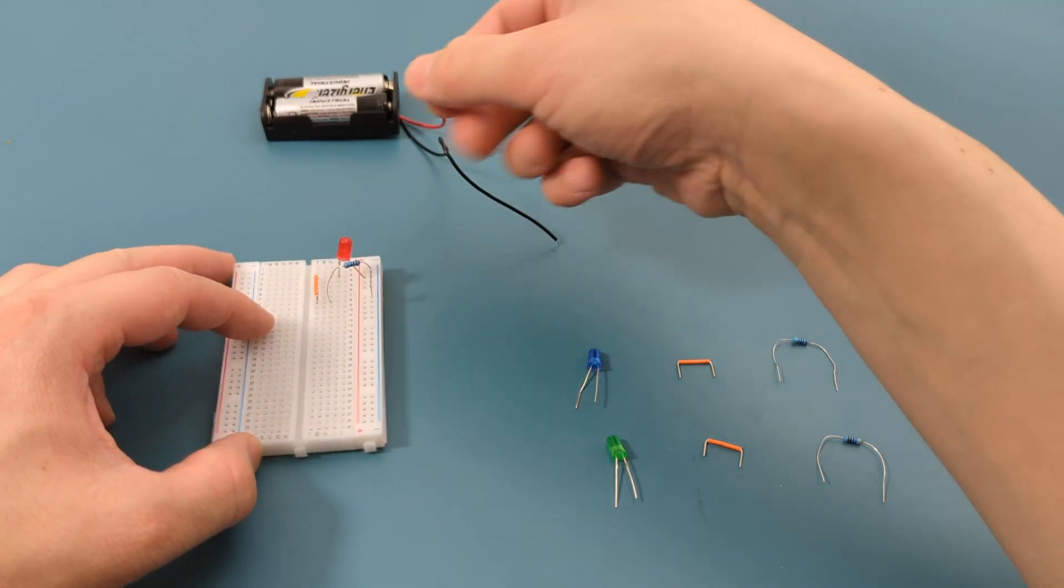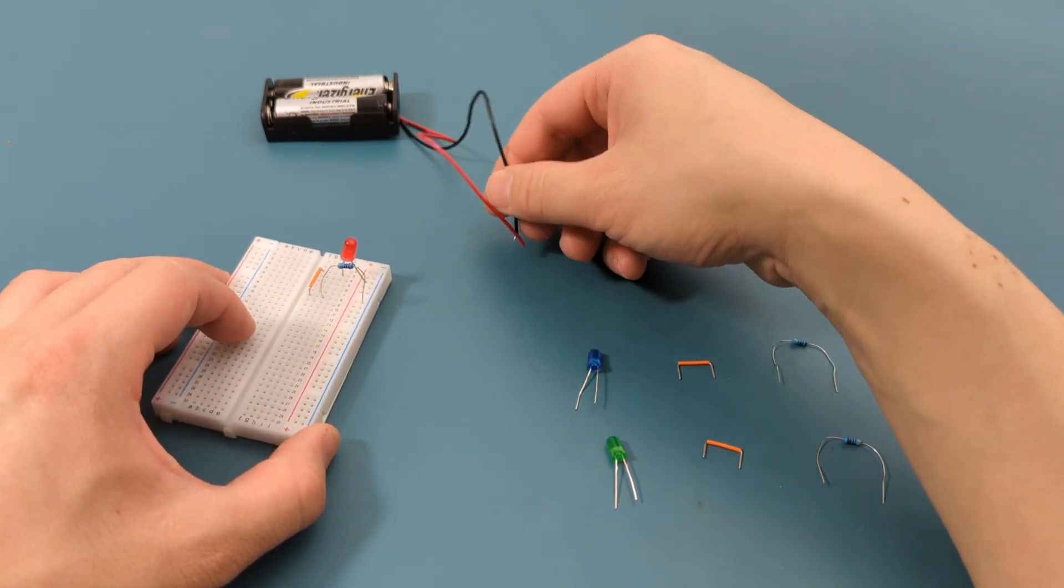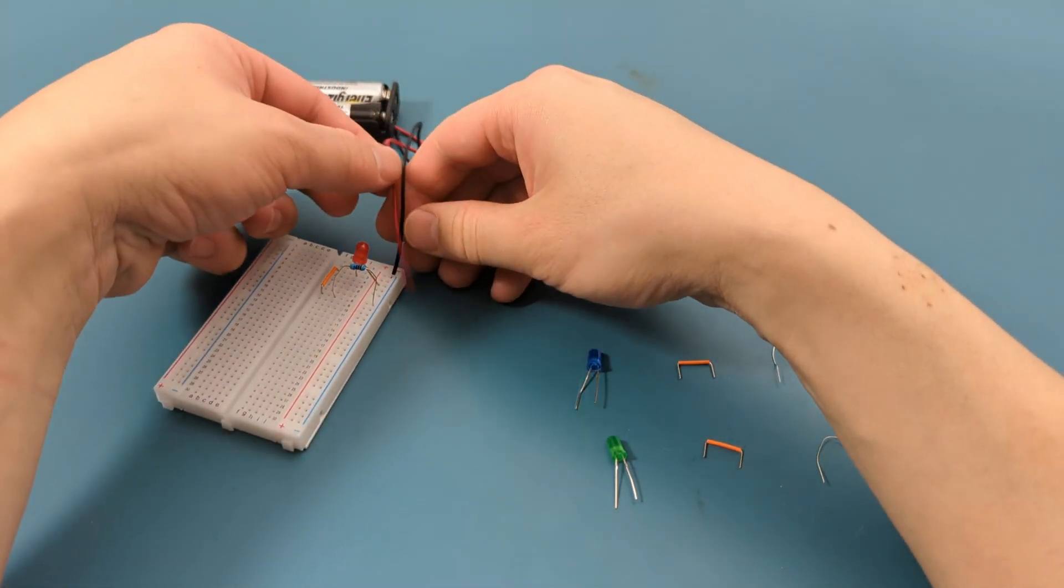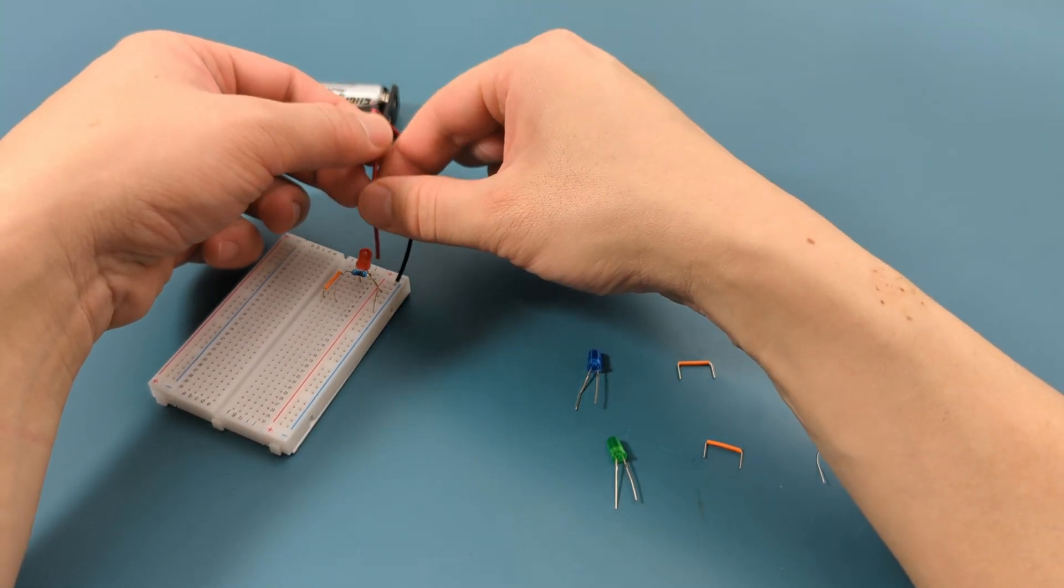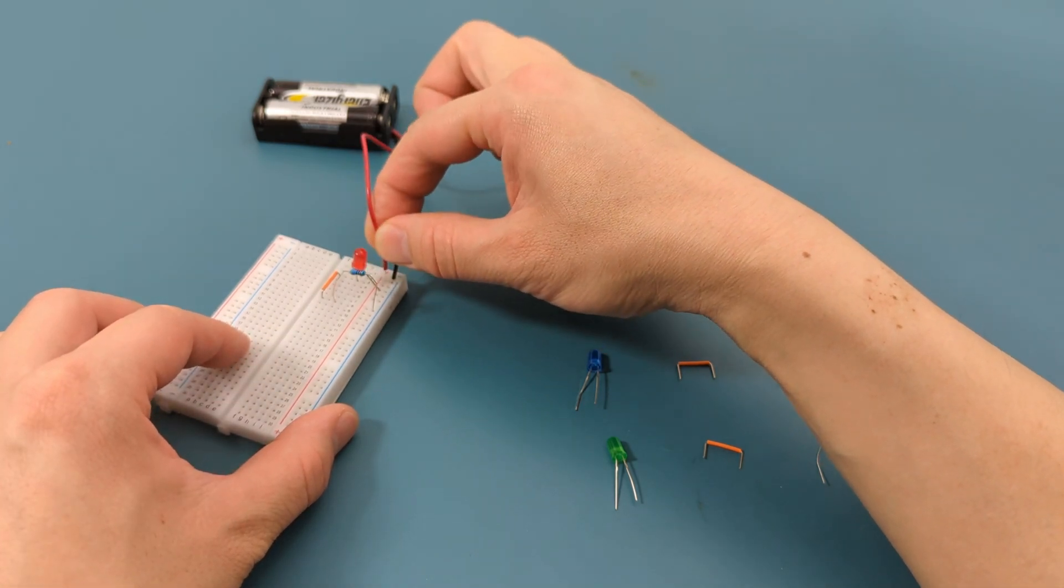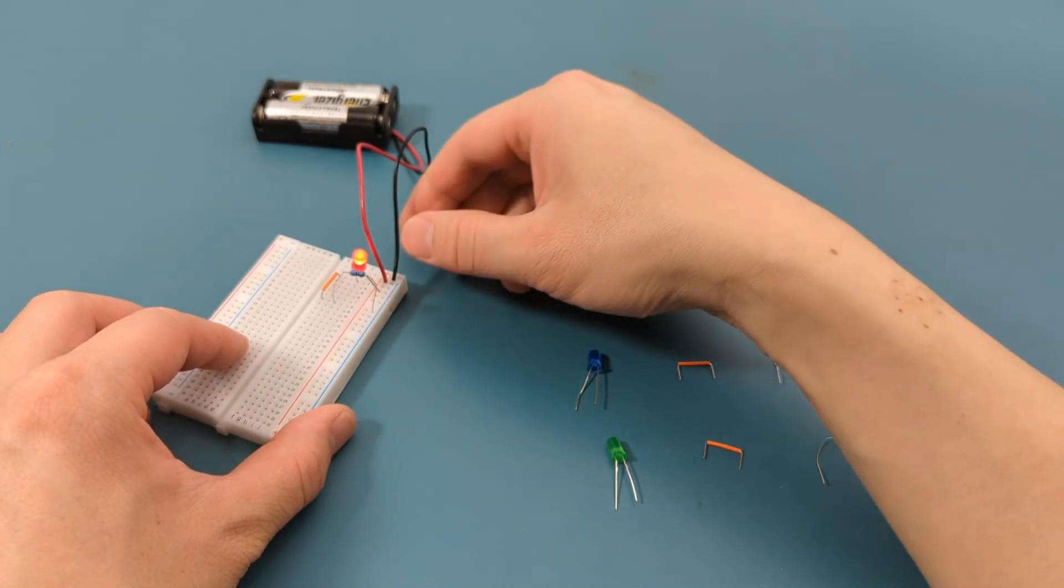Connect the negative lead of the battery holder to the blue power rail. Connect the positive lead of the battery holder to the red power rail. The LED lights up so we've connected our circuit correctly.